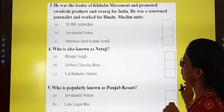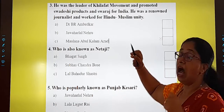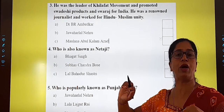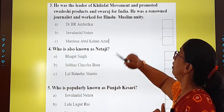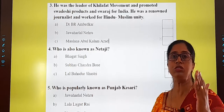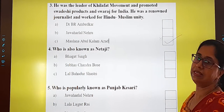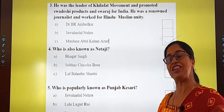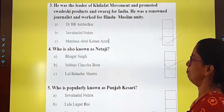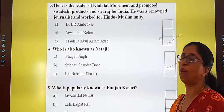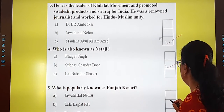Next, third one: 'He was a leader of the Khilafat Movement, and he promoted Swadeshi products and Swaraj — self-rule. He was also a journalist who worked for Hindu and Muslim unity.' He was Maulana Abul Kalam Azad. Next: 'Who is known as Netaji? Everybody fondly calls him Netaji.' Who is this? Subhash Chandra Bose. And 'he is known as Punjab Kesri' — who is he? He is Lala Lajpat Rai.